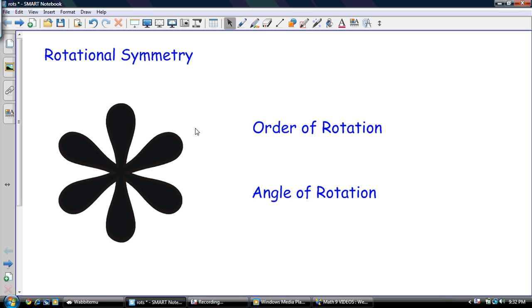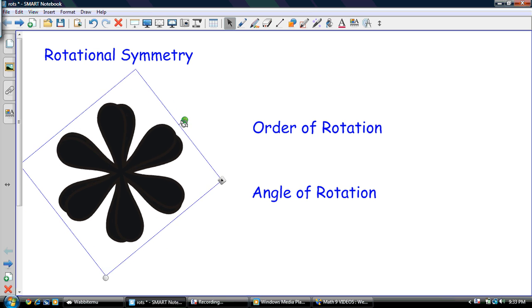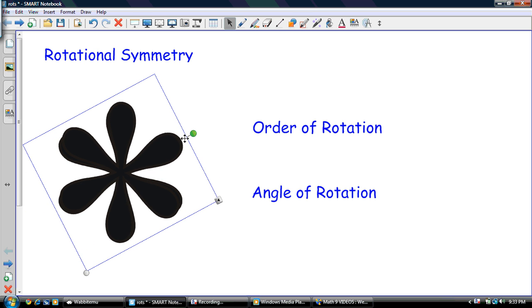So here I have just a random symbol that I found, and we're going to rotate it and see if it has rotational symmetry. So let me rotate it and see what happens. So I rotate this around, and we reach this point right here, where something magical kind of happens, right? It sort of looks exactly like it was from the start.